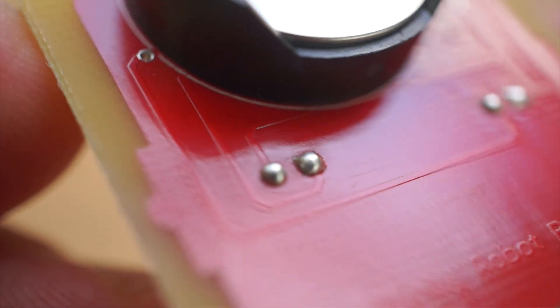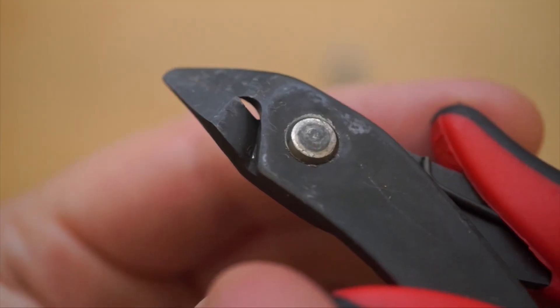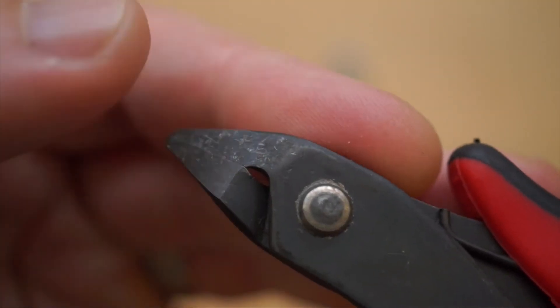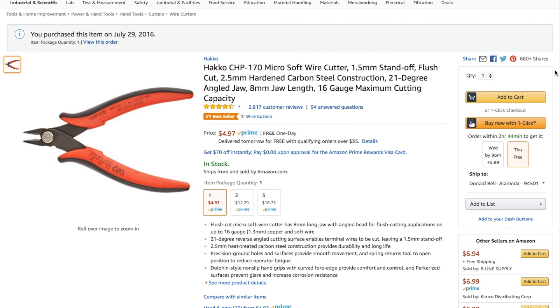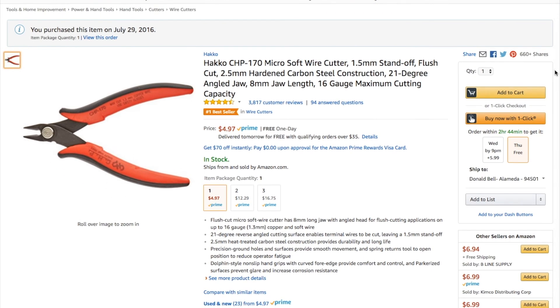You don't need any special soldering iron or solder to make this technique work, but you really do need the flush cutters to get up right against the board. I've got a link to these exact ones in the description. And remember, you can see thousands of reader-recommended tools just like this at cool-tools.org.